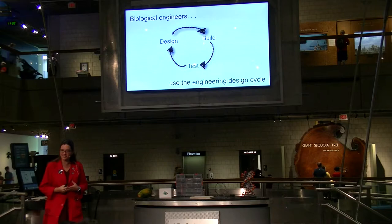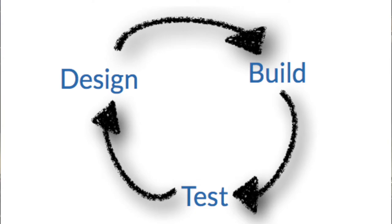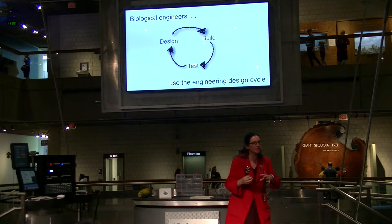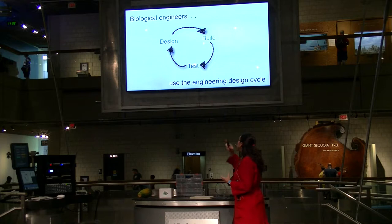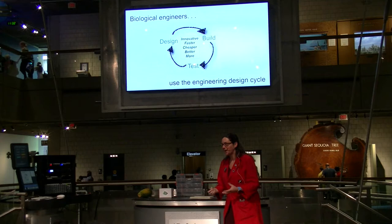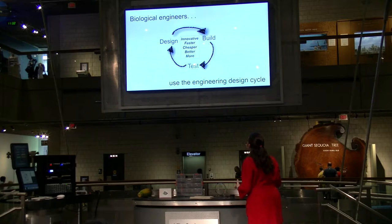They also use the engineering design cycle, which very simply put is: once you come up with an idea, you design something you'd like to build, you build it, you test it, and then there's often an iteration where after you test it, you have to change something to make it better. You keep going around this cycle until you get your final result — often an innovation upon the first thing you were trying to improve, making it faster, cheaper, or better.